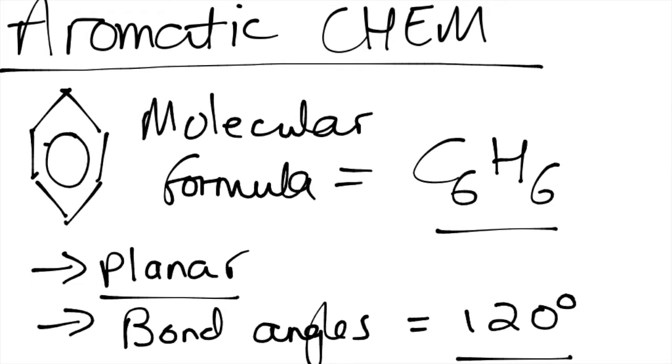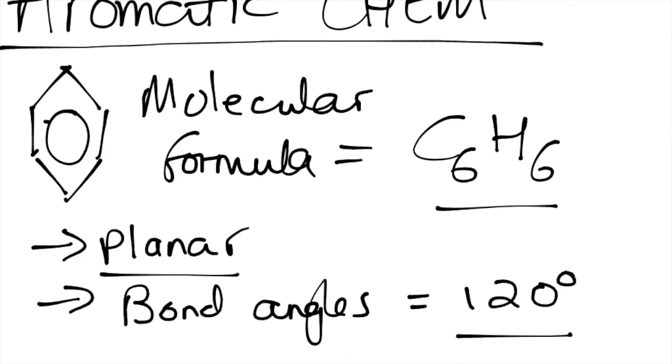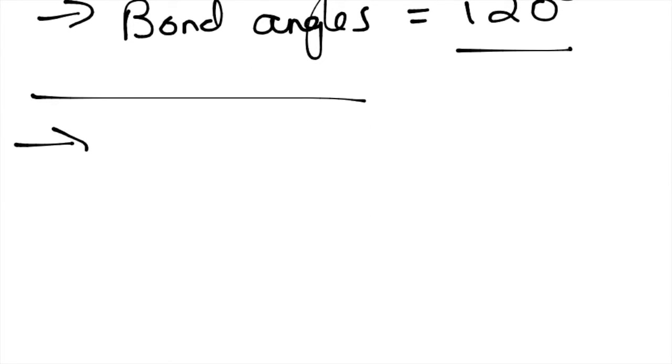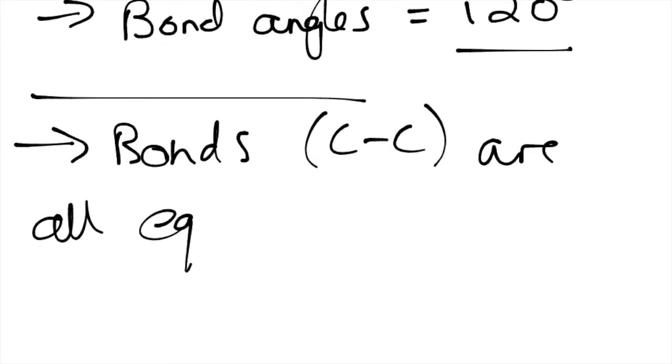There's a distinction between this and something called cyclohex-1,3,5-triene. How do we know it's not this, which you've probably been told about, is because the bonds, the CC bonds, are all equal in length.